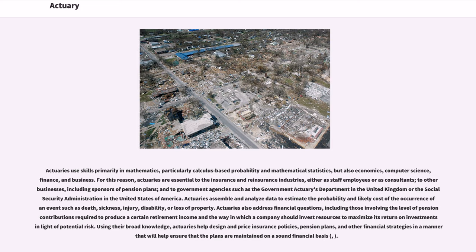Actuaries also serve government agencies such as the Government Actuaries Department in the United Kingdom or the Social Security Administration in the United States. Actuaries assemble and analyze data to estimate the probability and likely cost of the occurrence of an event such as death, sickness, injury, disability, or loss of property. Actuaries also address financial questions, including those involving the level of pension contributions required to produce a certain retirement income and the way in which a company should invest resources to maximize its return on investment in light of potential risk.